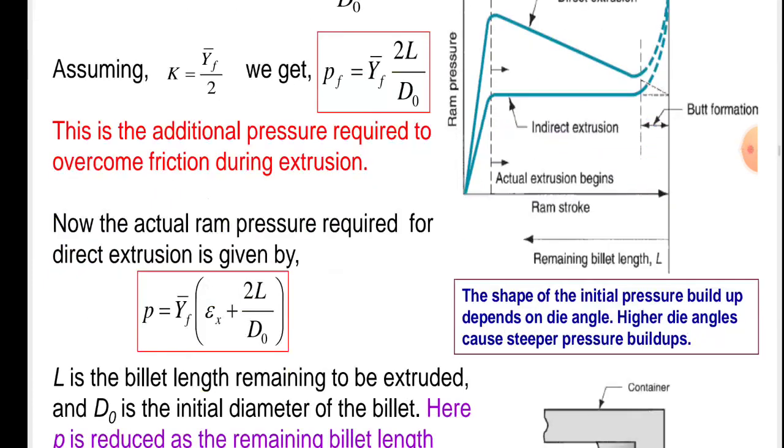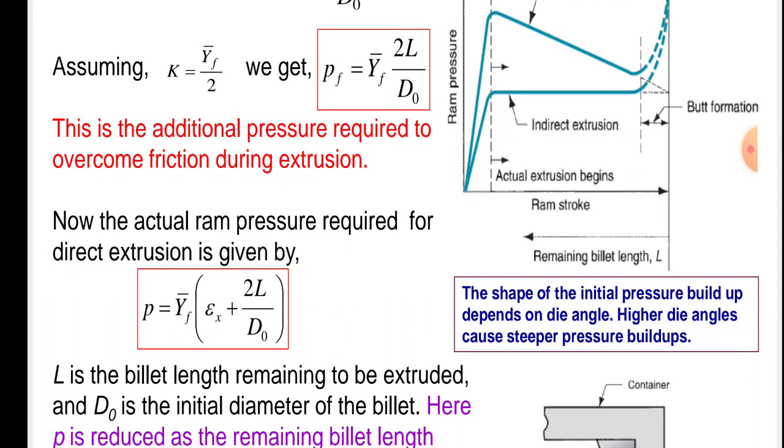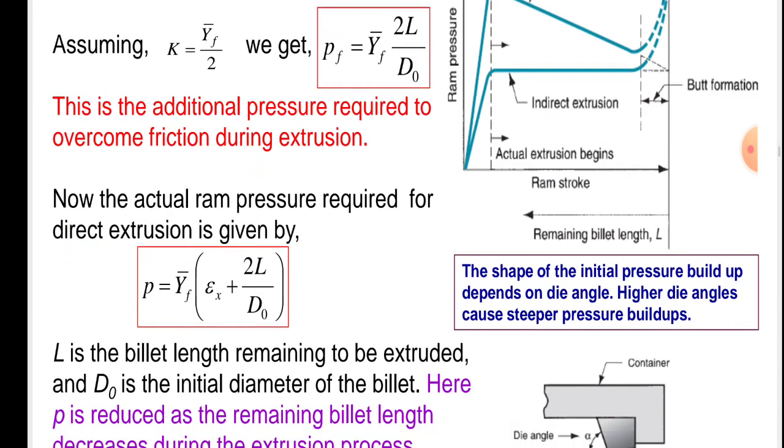Ram billet length L is given. The remaining billet length is given by length L. The shape of the initial pressure buildup depends on die angle. Higher die angles cause steeper pressure buildups.